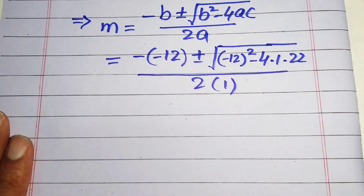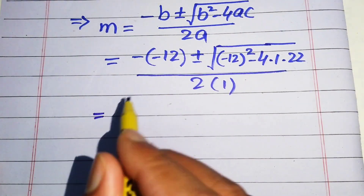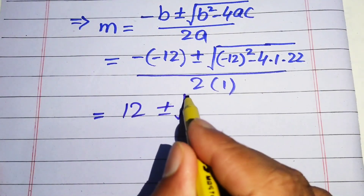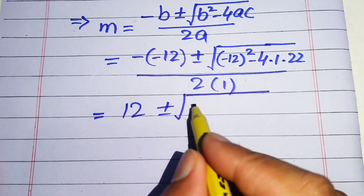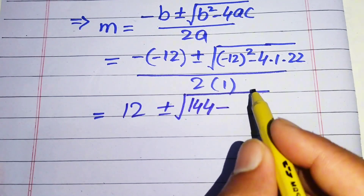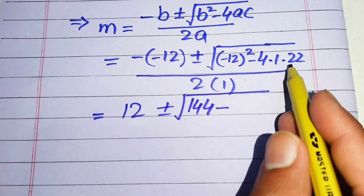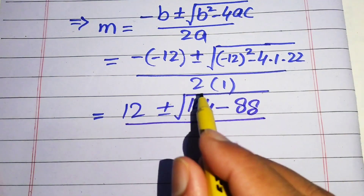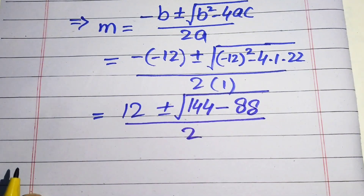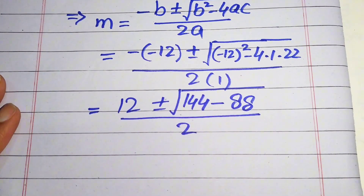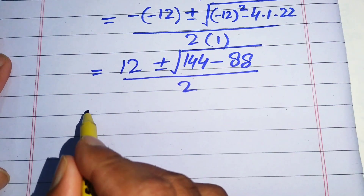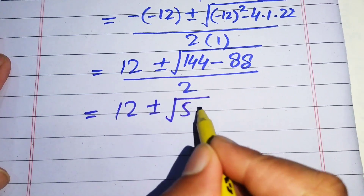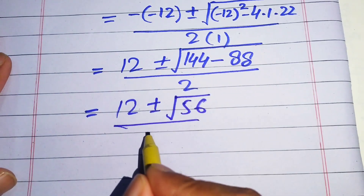Minus times minus gives plus 12, plus or minus the square root of: (minus 12)² equals 144, minus 4 times 22 equals 88, all divided by 2 times 1, which is 2. Subtracting, 144 minus 88 gives us 12 plus or minus the square root of 56, divided by 2.